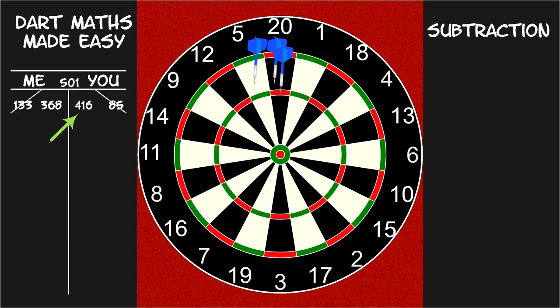By rounding up to 100, you've made the first step, 500 minus 100, a no-brainer. The trick works every time.